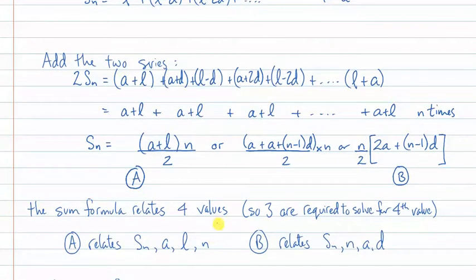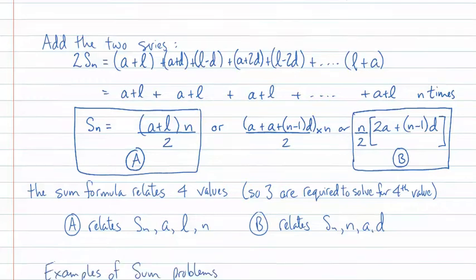The sum formula relates four values. If it relates four values, I need to know three of them in order to solve for the fourth. Notice that formula A relates sum, first term, last term, and n, which I've listed here. And formula B relates sum, n, first term, and d. So there are a relationship of different items here, and that's going to be important for problem solving. It depends on what we're given as to which formula that we use. We'll box these just to make it stand out a little bit for you. There's one formula, and there's the other formula. All right. So we're going to do some examples now to see how these formulas work.